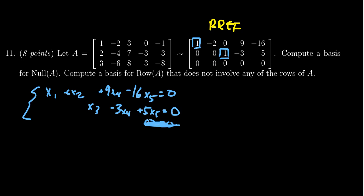We could pull these things apart. We solve for the dependent variables, these are going to be the variables in the pivot positions. x1 equals negative x2 minus 9x4 plus 16x5.